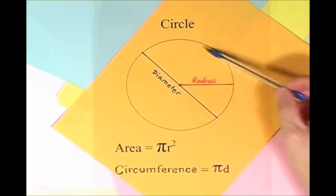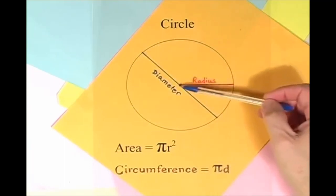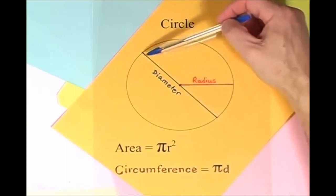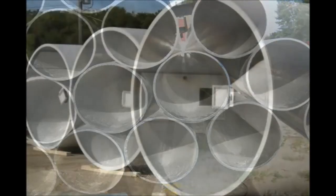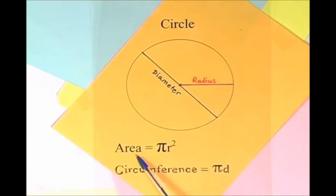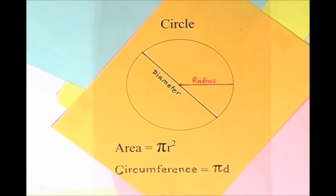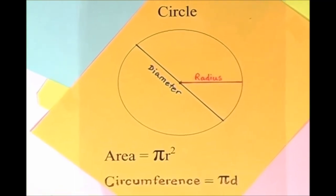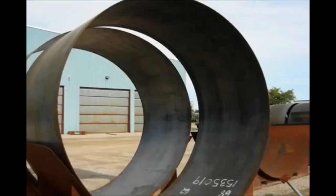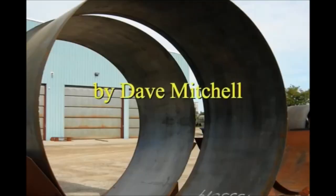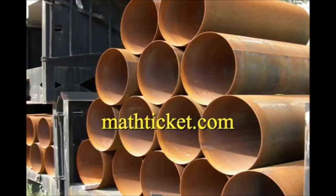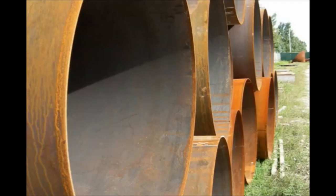Here is a circle, it knows how to get around. It has a radius from center to rim. And its diameter's a line that goes from side to side while passing through the center, now isn't that simple. Pi r squared sounds like area to me, when I need a circumference, I'll just use pi d. Pi r squared sounds like area to me. Here is a circle, it knows how to get around.